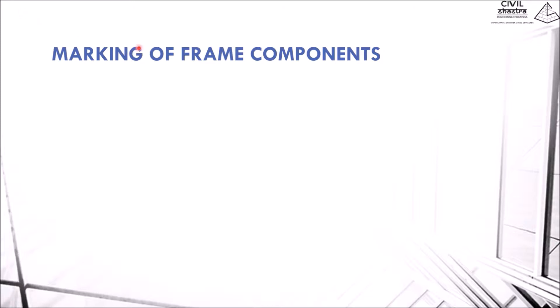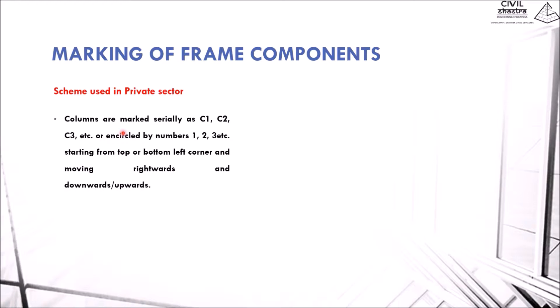In this lesson, we'll be learning about the marking of frame components using the private sector method. In this method, the columns are marked as C1, C2, C3, or they can be encircled by numbers 1, 2, 3, and so on, starting from the top or the bottom left corner and going rightwards and then downwards.